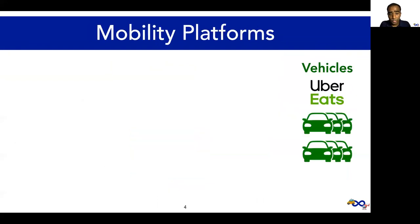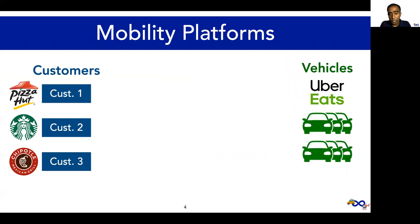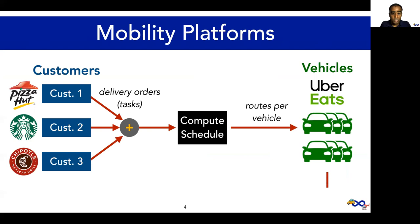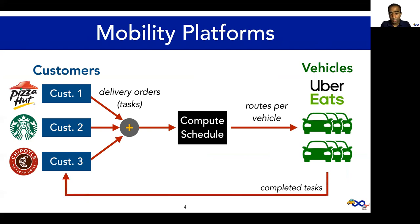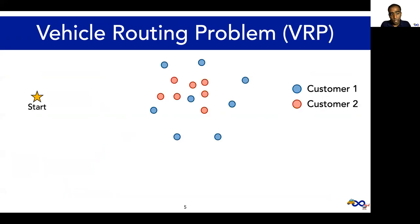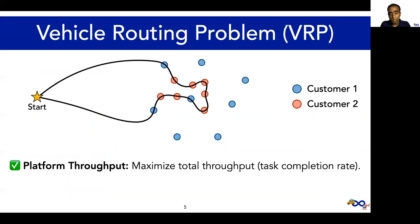In these mobility platforms, the vehicle fleet of cars, vans, bikes, or drones is a shared infrastructure. The platform serves multiple customers, with each customer requiring a set of tasks to be completed. For instance, a restaurant subscribing to Uber Eats is a customer with several food delivery orders or tasks in a city. The problem of scheduling tasks on a vehicle fleet has been studied extensively for decades. This scheduling problem is known as the vehicle routing problem. The VRP involves computing routes for each vehicle so that as many customer tasks are completed within the resource constraints, like fuel or battery.